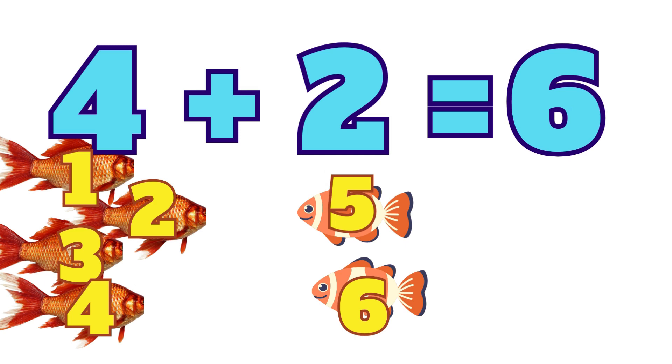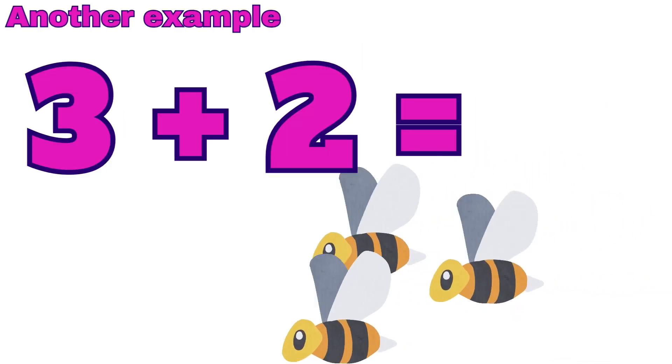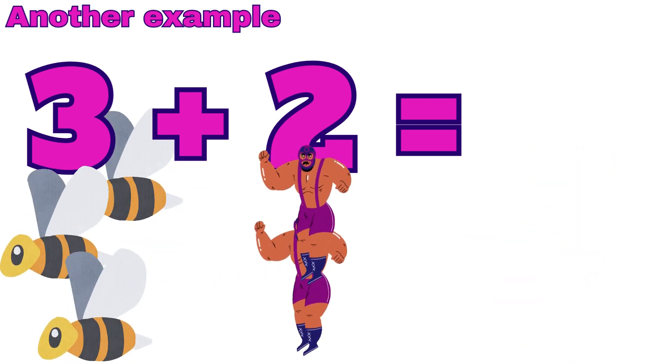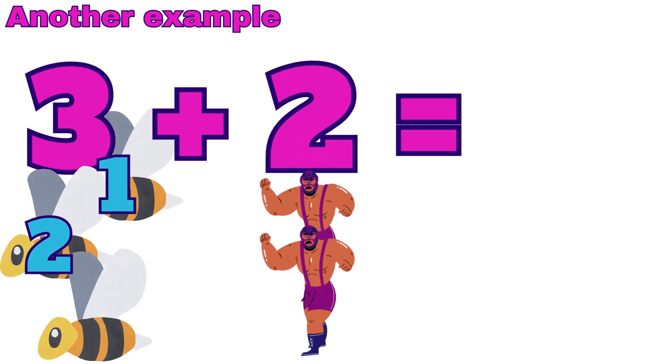Let's try another example, three plus two. The bees here represent the number three, and the men represent the number two. Help me count one, two, three, and one, two.